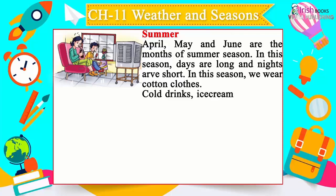Looking back: the condition of the air at a particular time is called weather. In India, there are three main seasons in a year. Winter season starts in November. In summer season, days are long and nights are short. The rainy season comes after the summer season. We like to stay indoors in summer season.